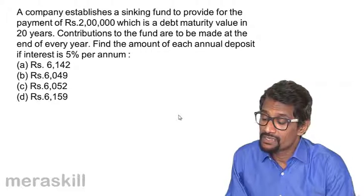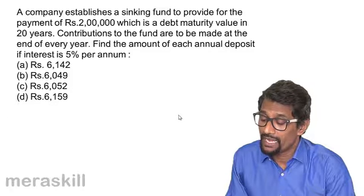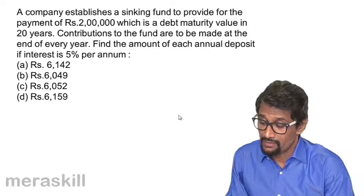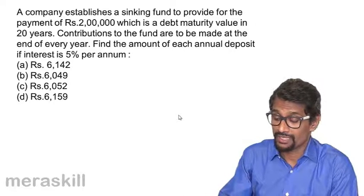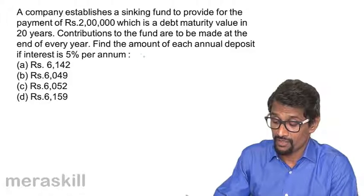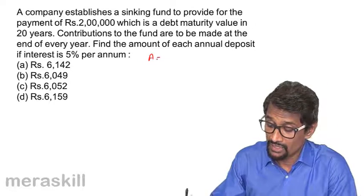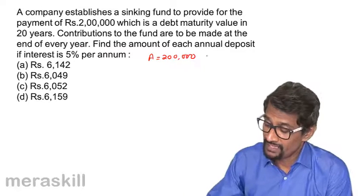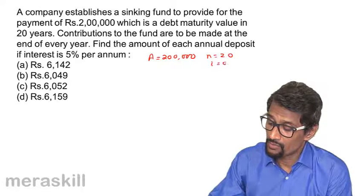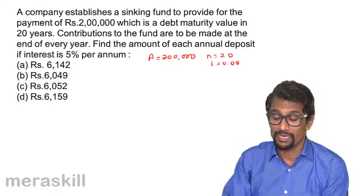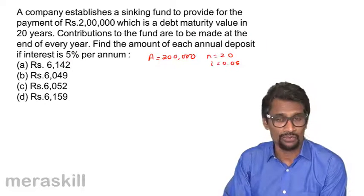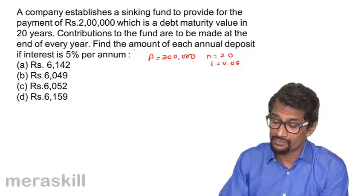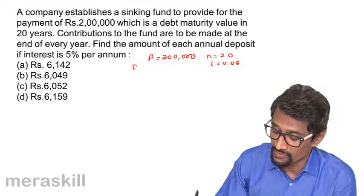A company establishes a sinking fund to provide for the payment of rupees 2,00,000, which is a debt maturity value in 20 years. So the amount that needs to accrue is 2,00,000, N is 20 years, and the interest rate is 0.05. Contributions to the fund are to be made at the end of each year — it is an annual annuity so that it becomes 2,00,000 at the end of 20 years. Find the amount of each annual deposit, i.e., find R.